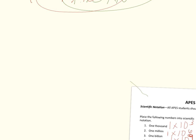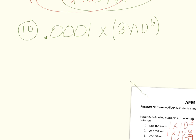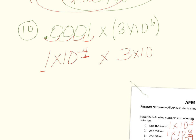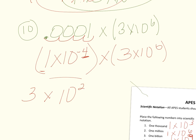Number ten: one ten-thousandth of three million. One ten-thousandth is one times ten to the negative fourth. Remember, 'of' in math means multiply. Three million is three times ten to the sixth. Multiply one by three to get three, then add the exponents negative four and six to get two. So the answer is three times ten to the second.